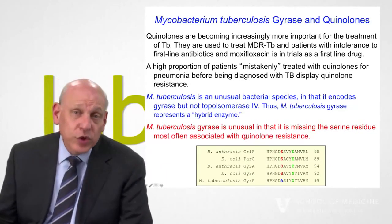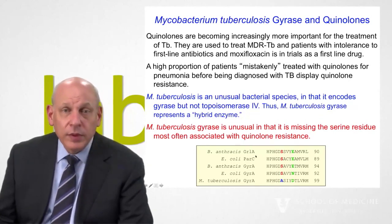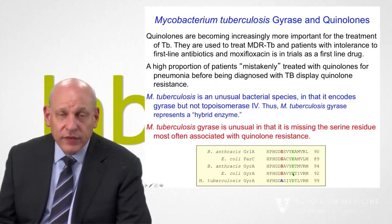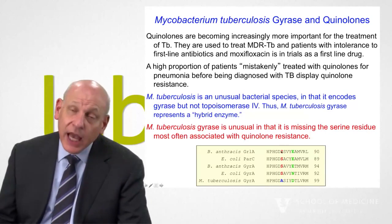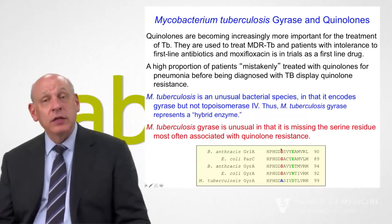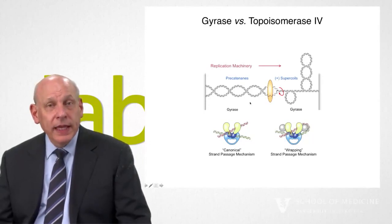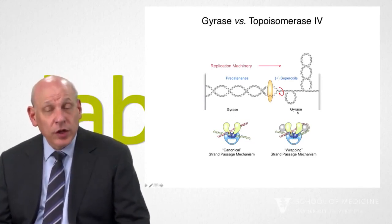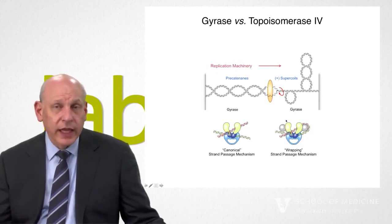Tuberculosis is really unusual in that it only encodes gyrase — it does not encode topoisomerase IV. So in this species, gyrase is a dual-function or hybrid enzyme that has to work both ahead of the fork and behind the fork: removing DNA overwinds as they take place but also unknotting and untangling daughter chromosomes. The other thing that makes it unusual: while most species have both the serine and the acidic residue forming the water-metal ion bridge, in tuberculosis there's an alanine where the important serine is. As a result, although quinolones work, they don't work as well against tuberculosis. In tuberculosis, it's only gyrase — all gyrase, all the time — with one target for quinolones.